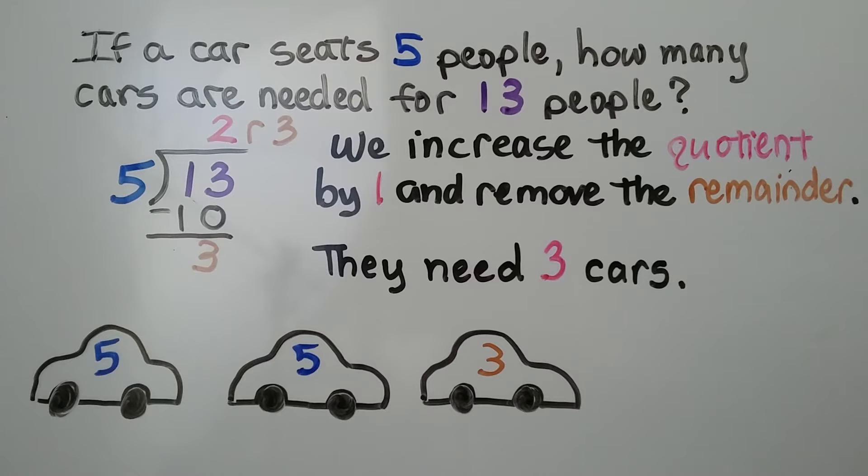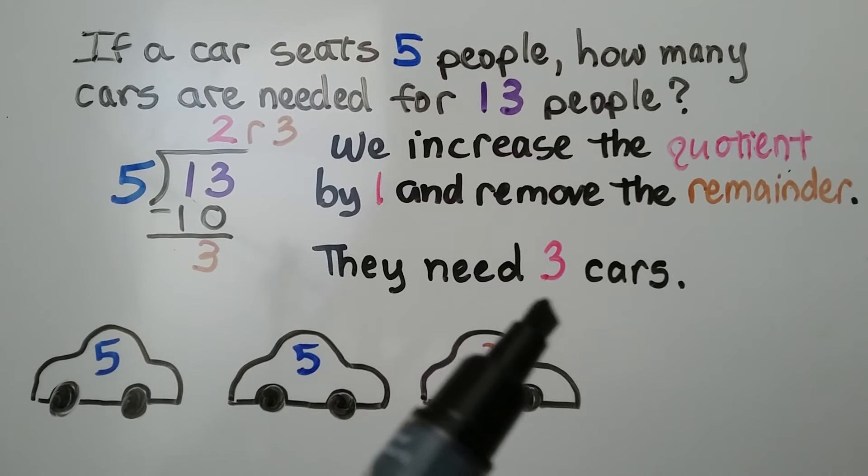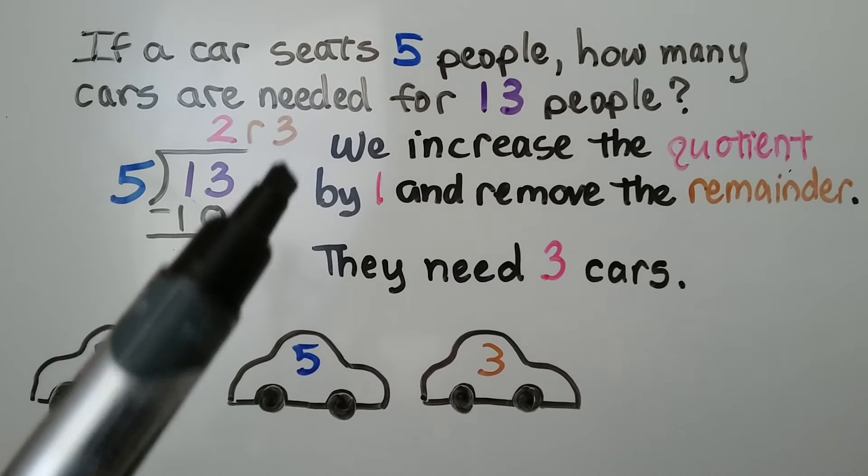If a car seats 5 people, how many cars are needed for 13 people? We do 13 divided by 5, and we get 2, remainder 3. We increase the quotient by 1, so instead of using a 2, we use a 3, and we remove that remainder.